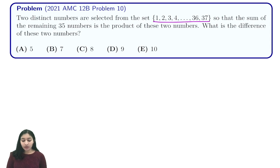So the sum of the remaining 35 numbers is the product of these two numbers, and we're trying to find the difference of the two numbers.